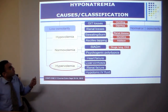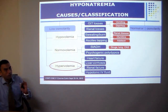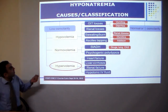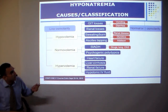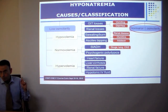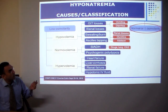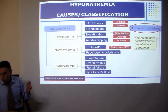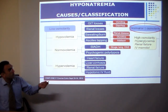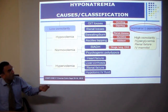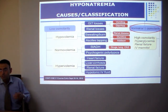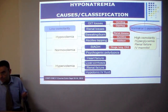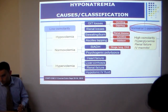Almost all patients with hyponatremia are associated with a hypo-osmolar state. However, some patients have hyponatremia with normal or even high osmolarity. This occurs because of the addition of other osmolites which increase osmolarity, such as in diabetic ketoacidosis.